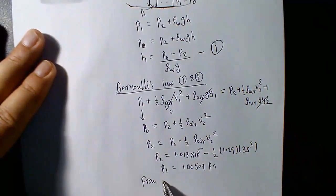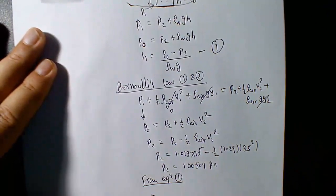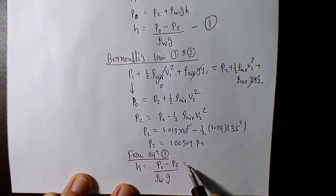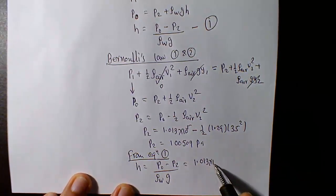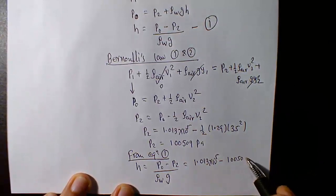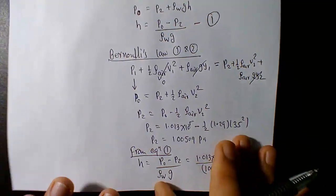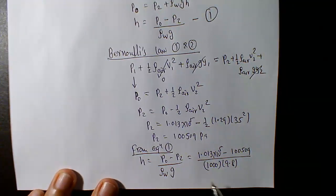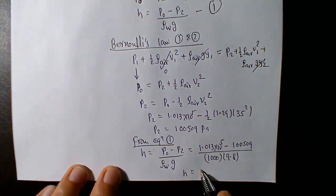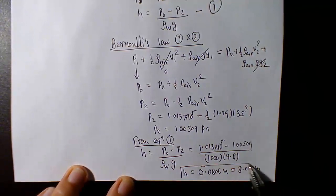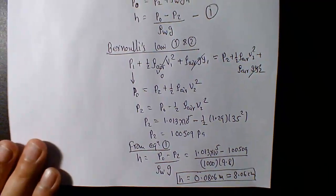Plugging into equation 1: h equals (p0 minus p2) divided by (rho_water times g) equals (101,300 minus 100,509) divided by (1000 times 9.8), giving h equals approximately 0.0806 meters, or about 8.06 centimeters. So the water in the vertical straw rises about 8 centimeters when high-speed air is blown across the top.